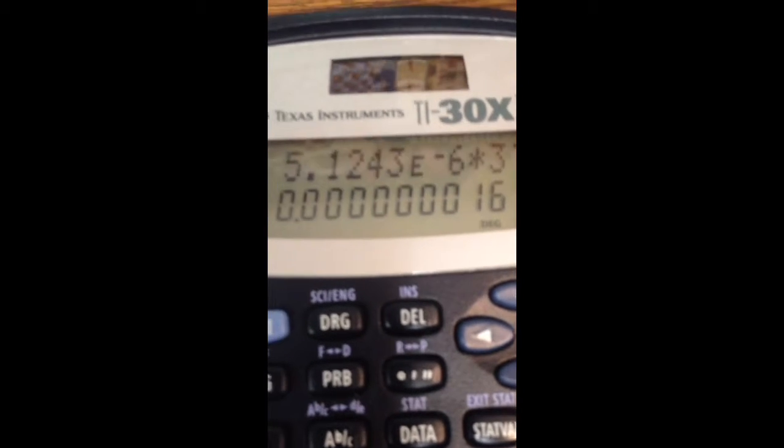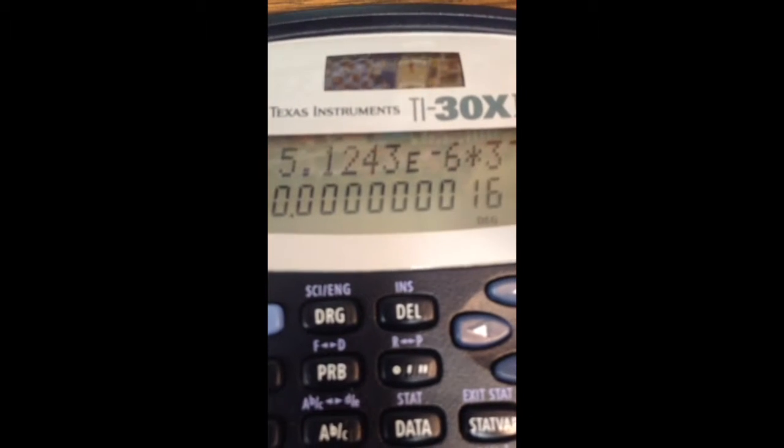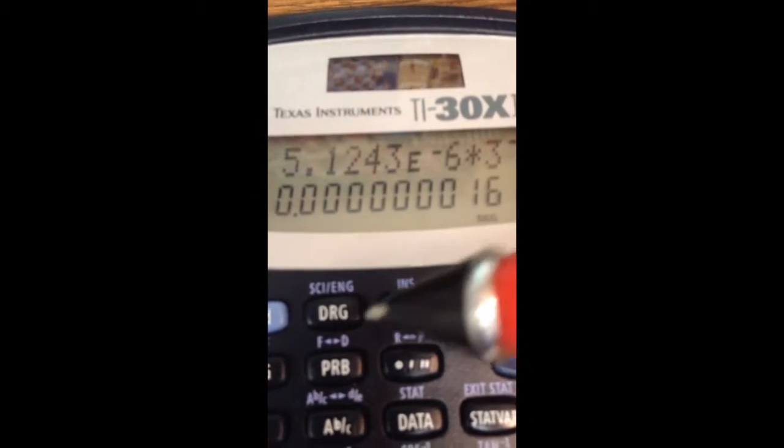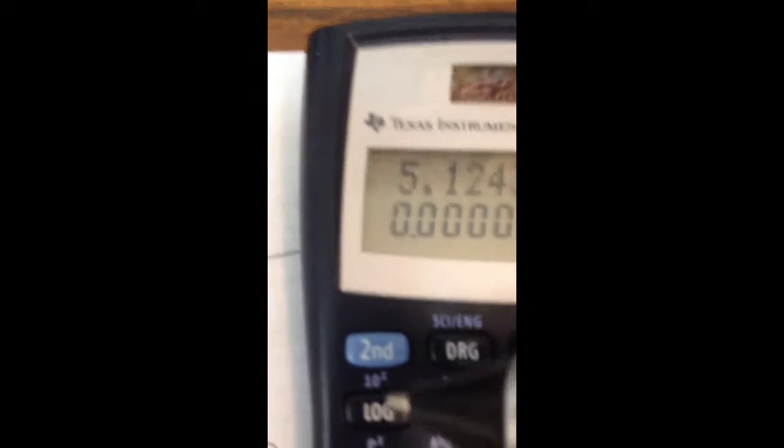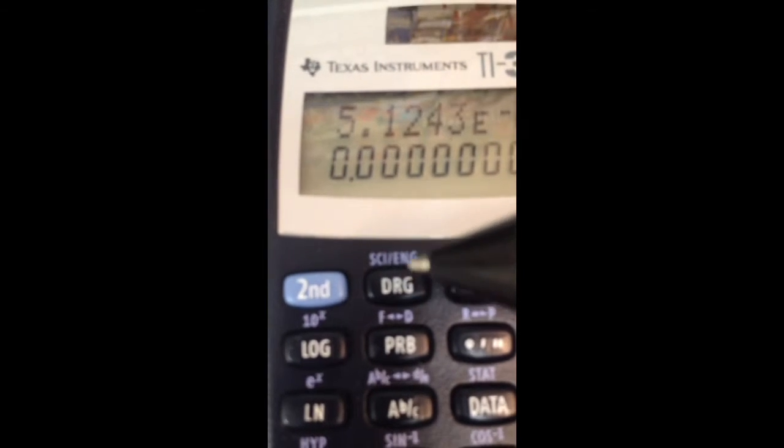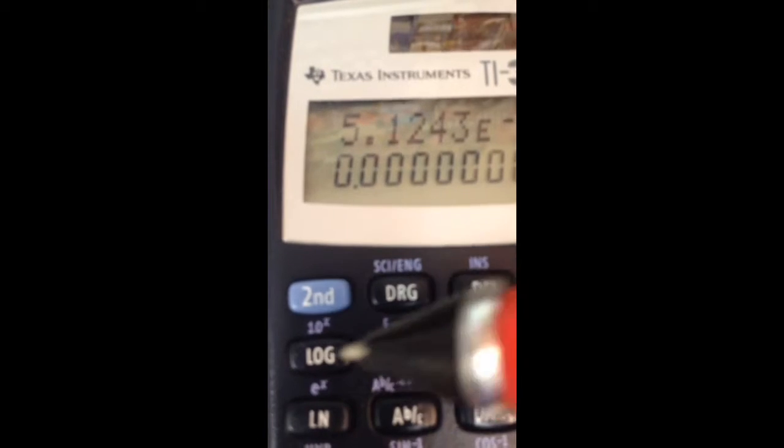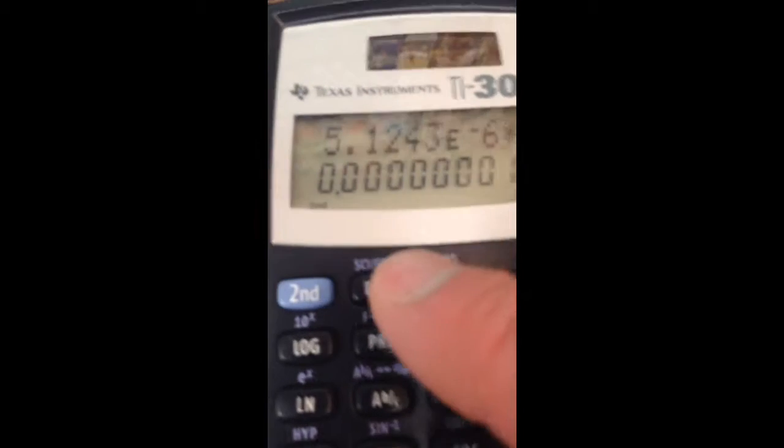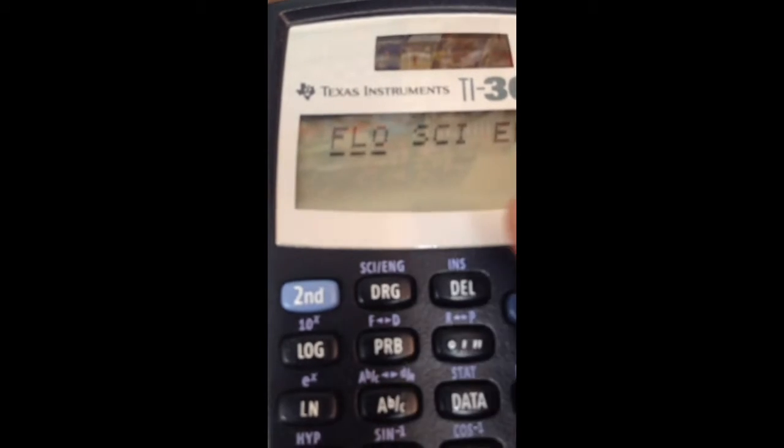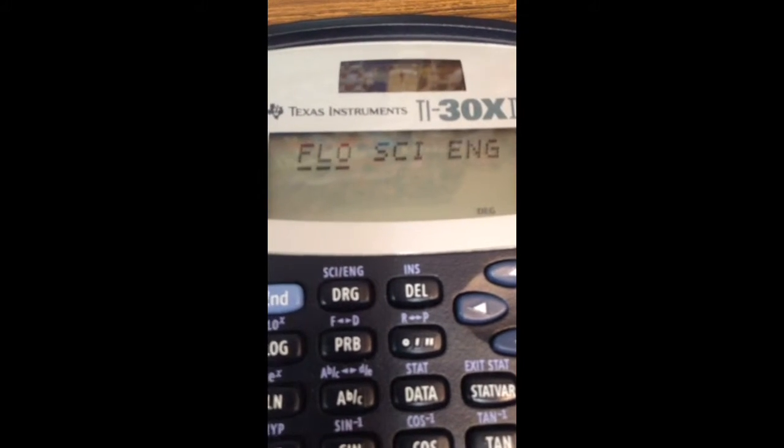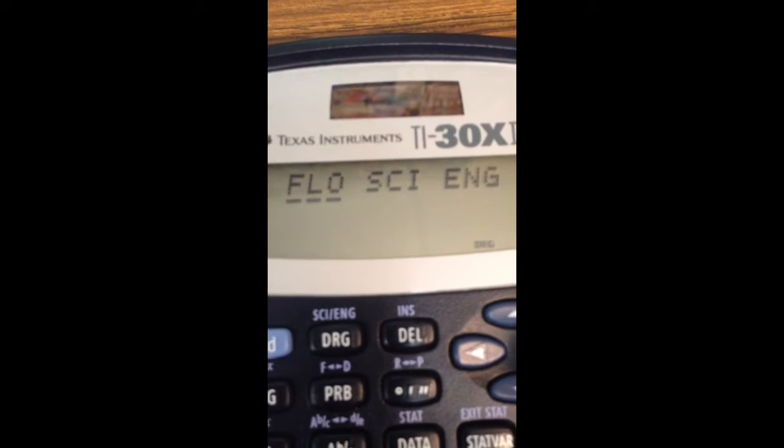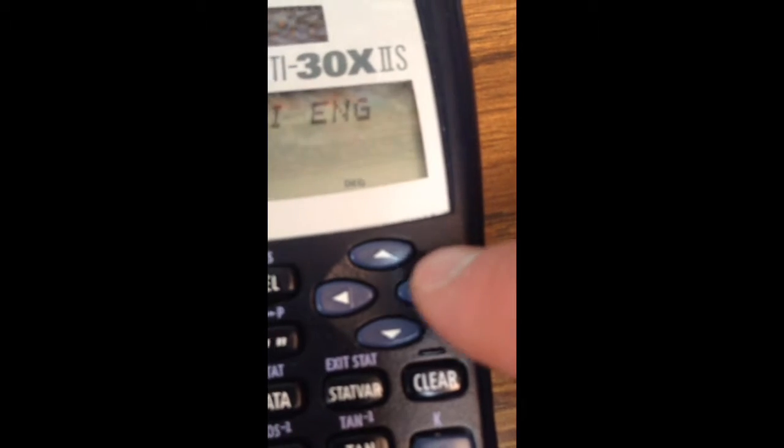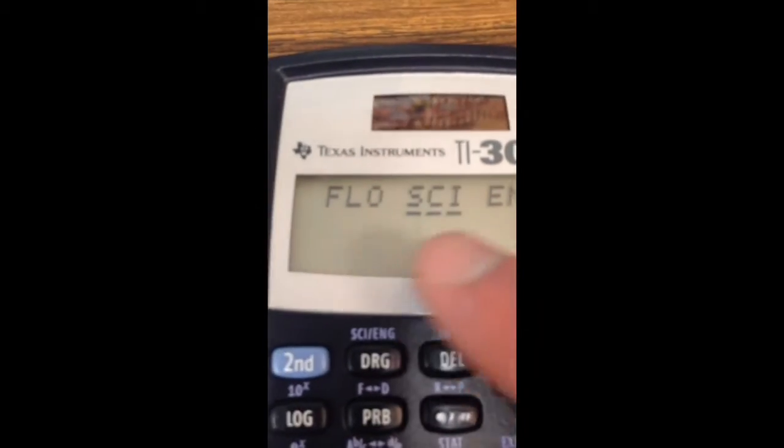How can I see more sig figs? I can do that by changing the display mode in my calculator. Again, I want to hit my 2nd key, and then I'm going to hit this key right here for science, engineering. So I hit 2nd, then I hit science and engineering, and that's on my screen: flow, science, engineering. Hit the arrow keys here. See this arrow? I hit the arrow key once, and that moves me into science.